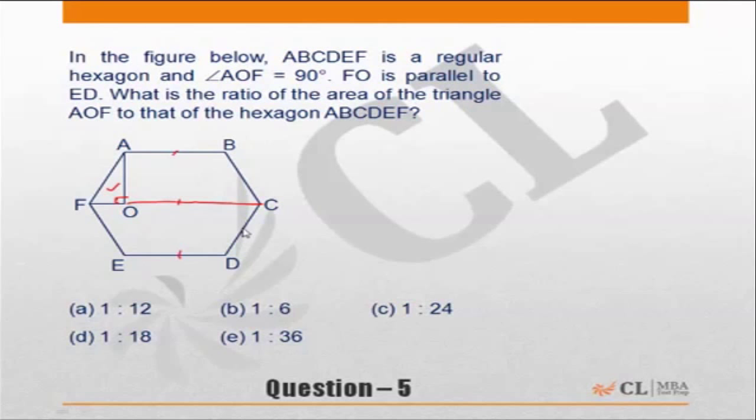Whenever there is a regular hexagon, you can draw this as 6 equilateral triangles constituting the hexagon. You can join these lines to get 6 equilateral triangles.